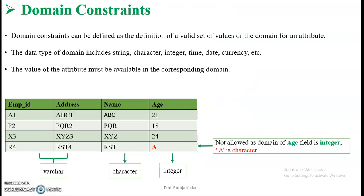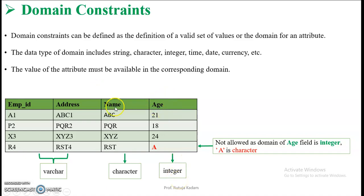Let us look at domain constraints first. Consider a table named 'employee' with four attributes: employee ID, address, name, and age. Employee ID and address are of type VARCHAR because the data can be alphanumeric — for example, employee ID 'A1' has both a character and a number. The domain for name is character and the domain for age is integer, meaning name accepts only characters and age accepts only integers.